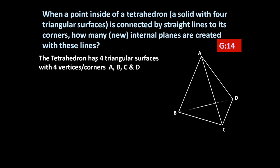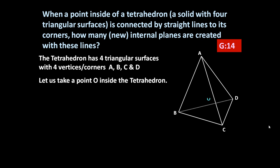First, let us draw a tetrahedron. The tetrahedron has four triangular surfaces with four vertices or corners: A, B, C, and D. There is a bottom surface and three other surfaces — this is called a tetrahedron. Now there is a point O inside the tetrahedron.